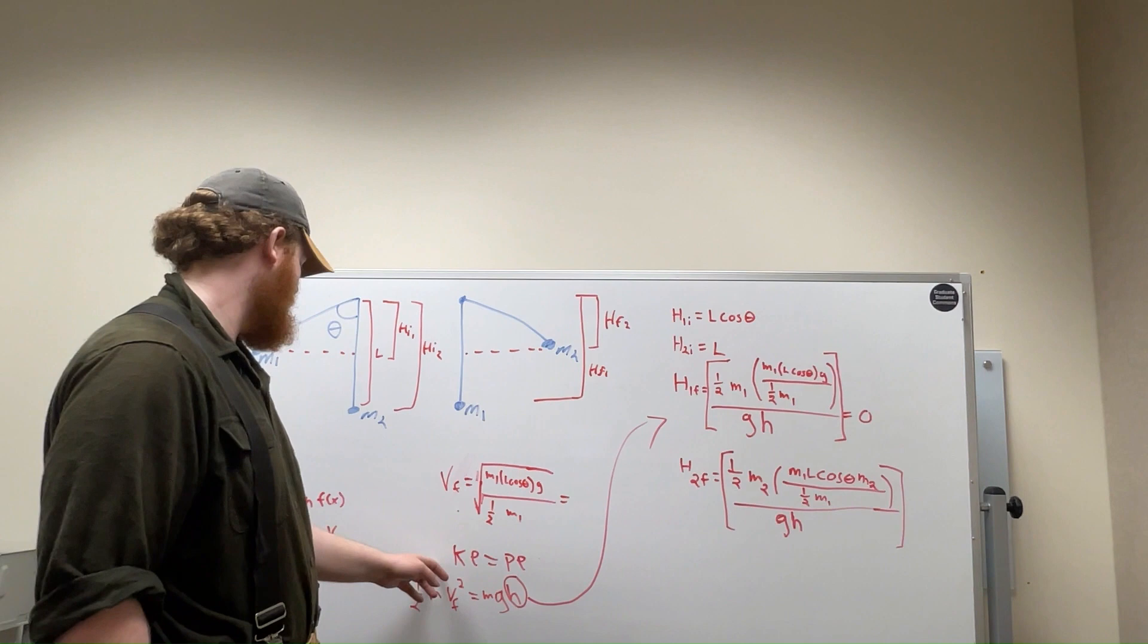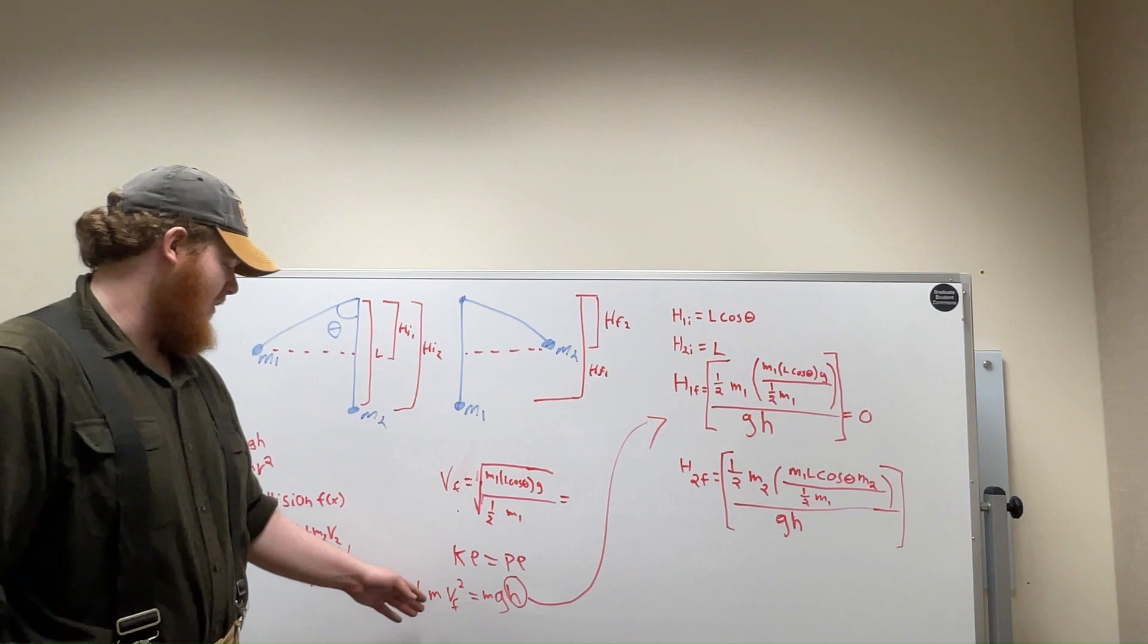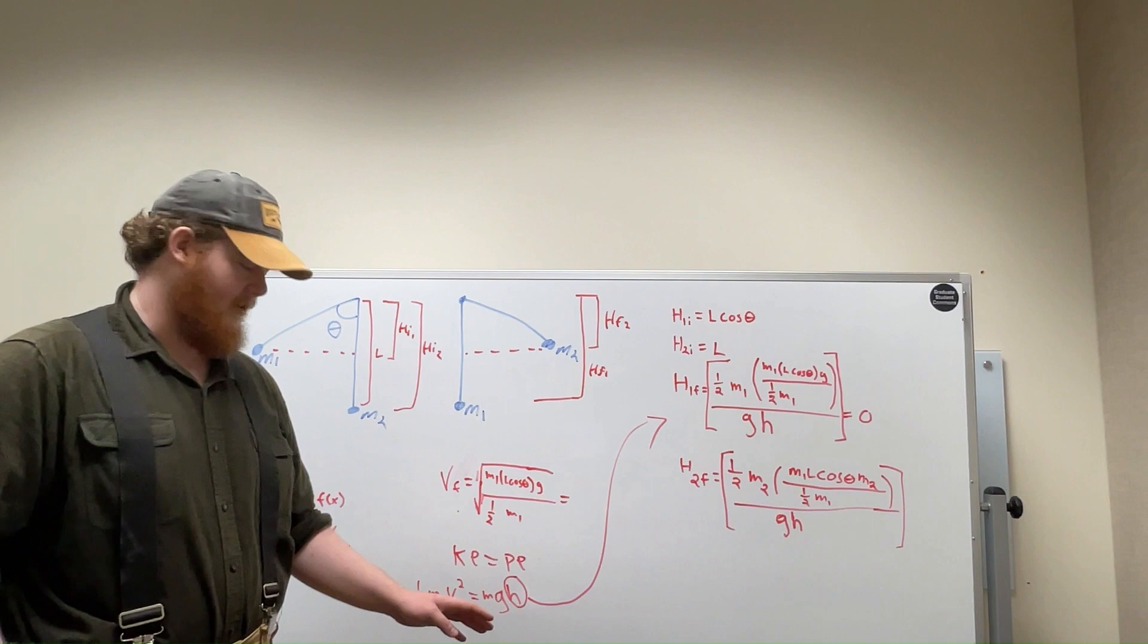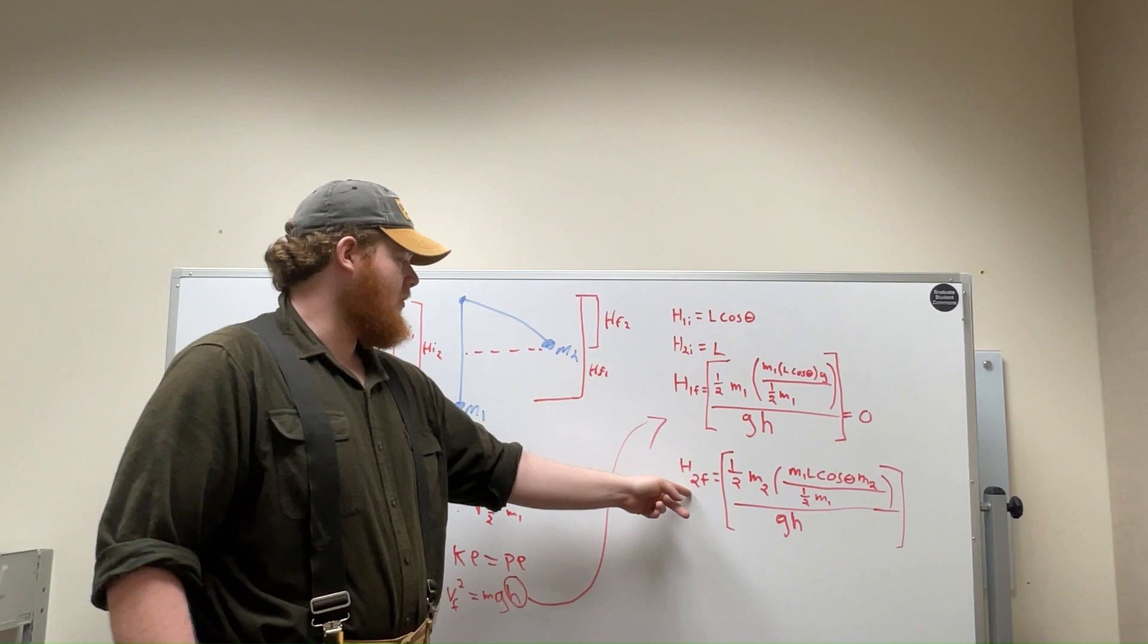So we take our final velocity and we plug that back into our original kinetic energy equals potential energy formula, which is the 1/2 MV final squared equals MGH. That's defined using our final velocity. We then solve for H. Using that, we do that for both M1 final and M2 final to find H1 final and H2 final.